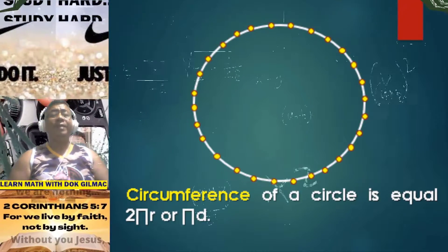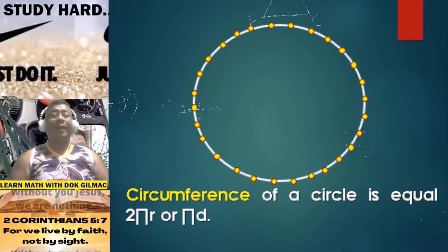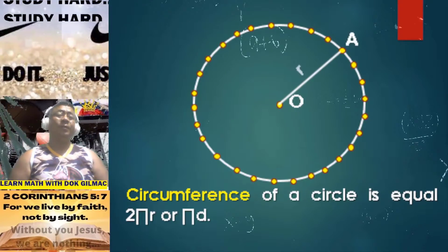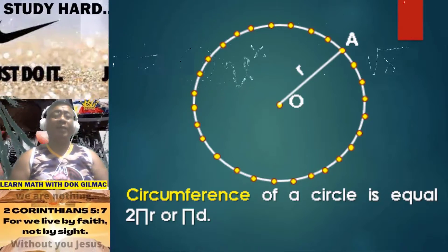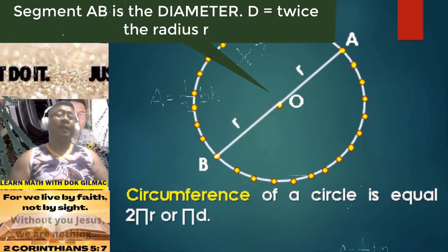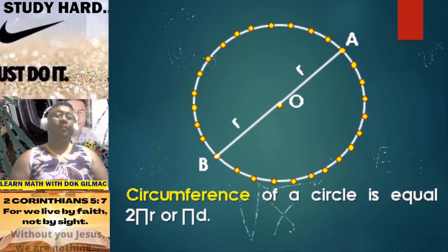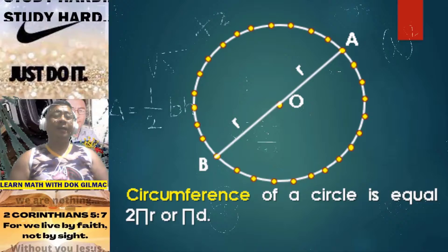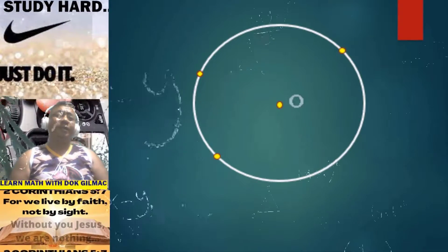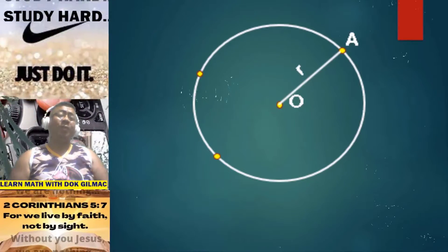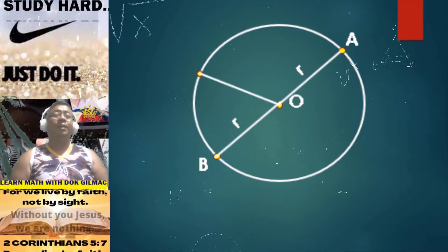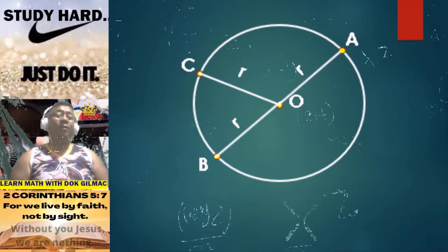The circumference of a circle is equal to 2πR or πD (pi times diameter). As you can see here, segment OA is the radius and segment OB is also the radius. If you are to determine the diameter, it is simply 2R. So the circumference is just equal to 2πR or π times diameter. Segment joining point O and A is the radius, segment joining point O and B is the radius, and segment joining point O and C is also the radius.